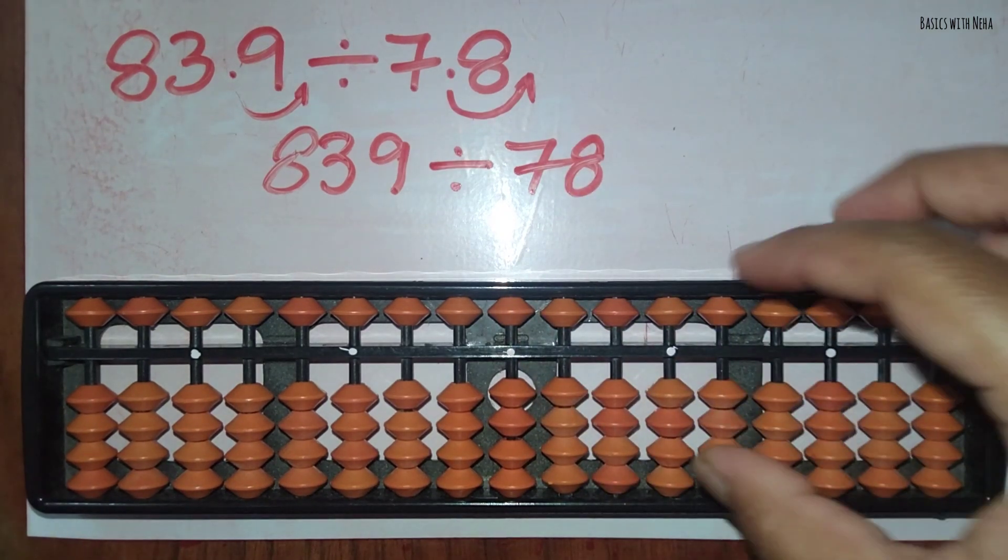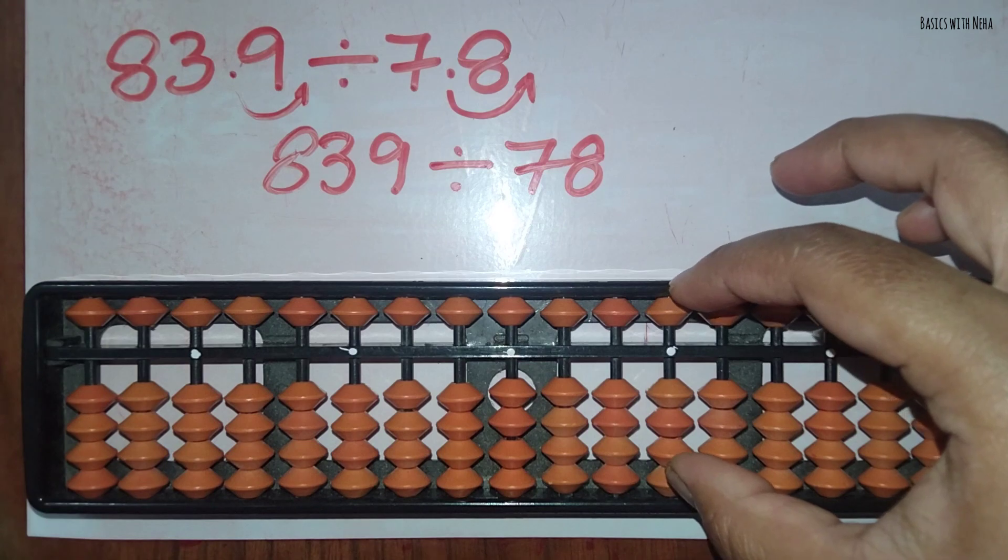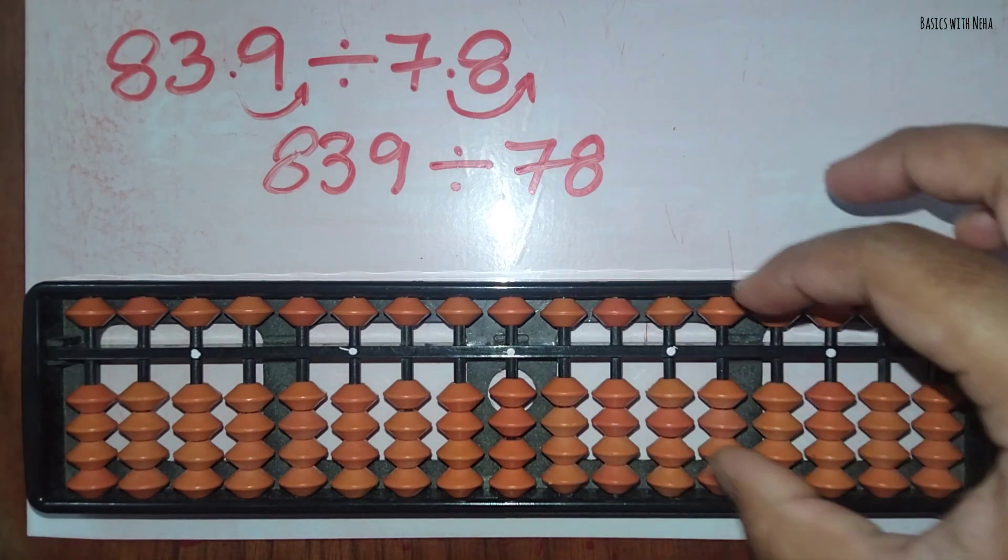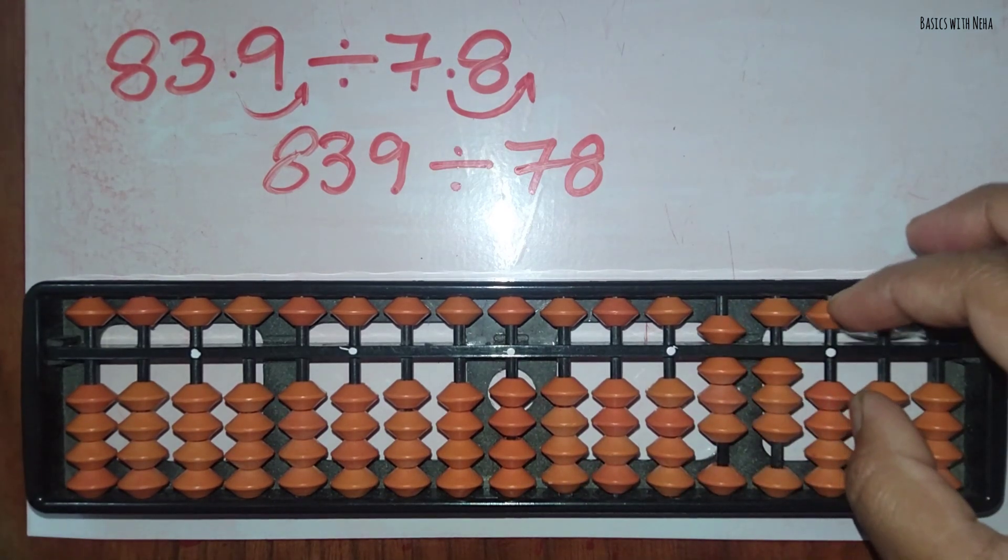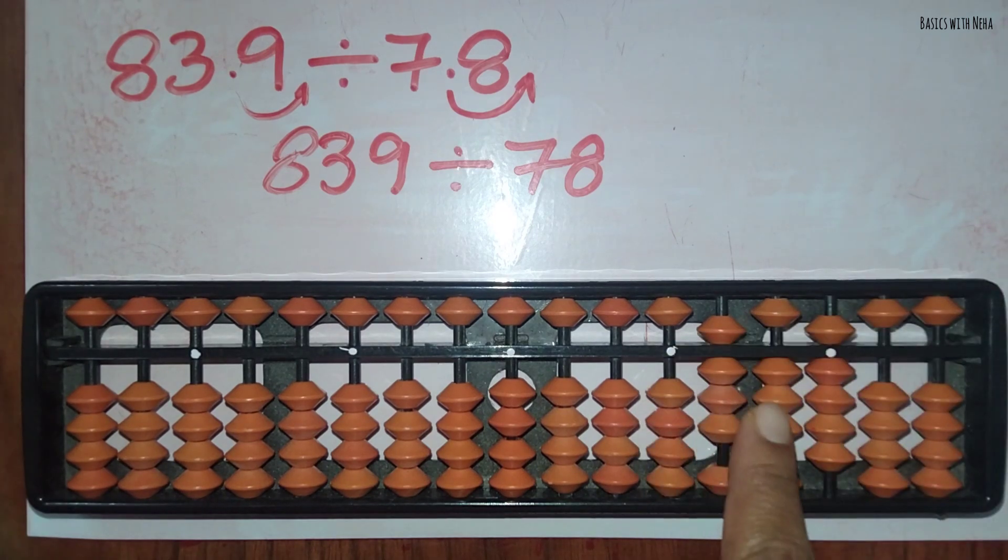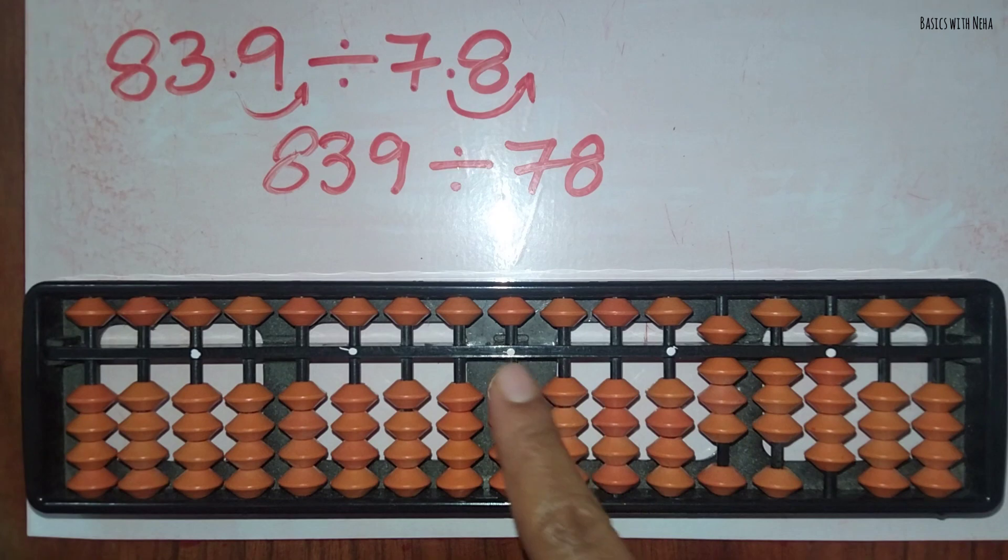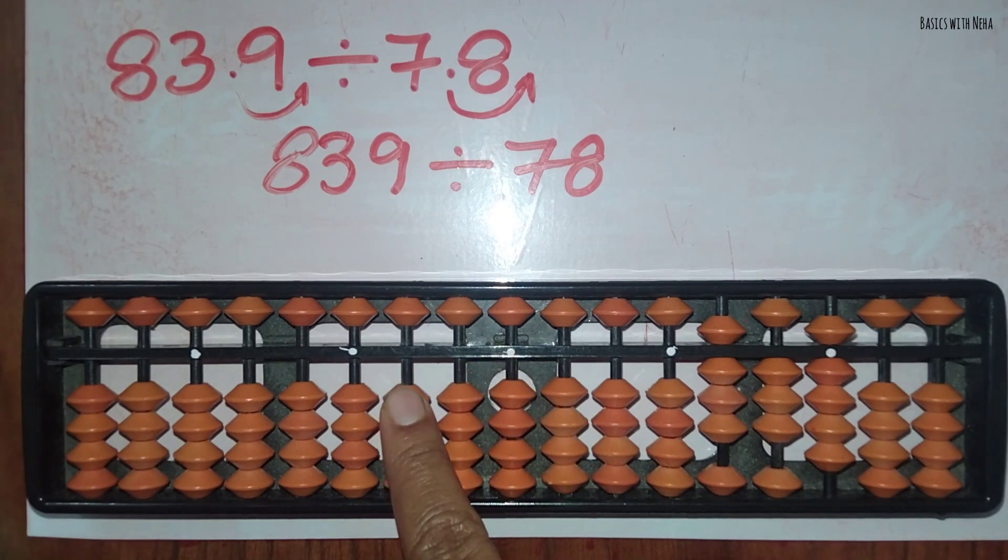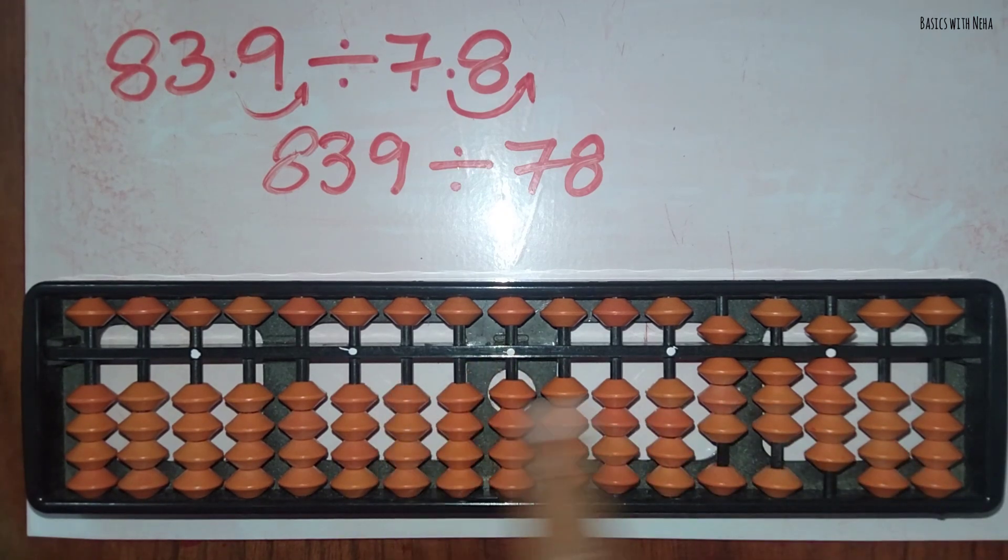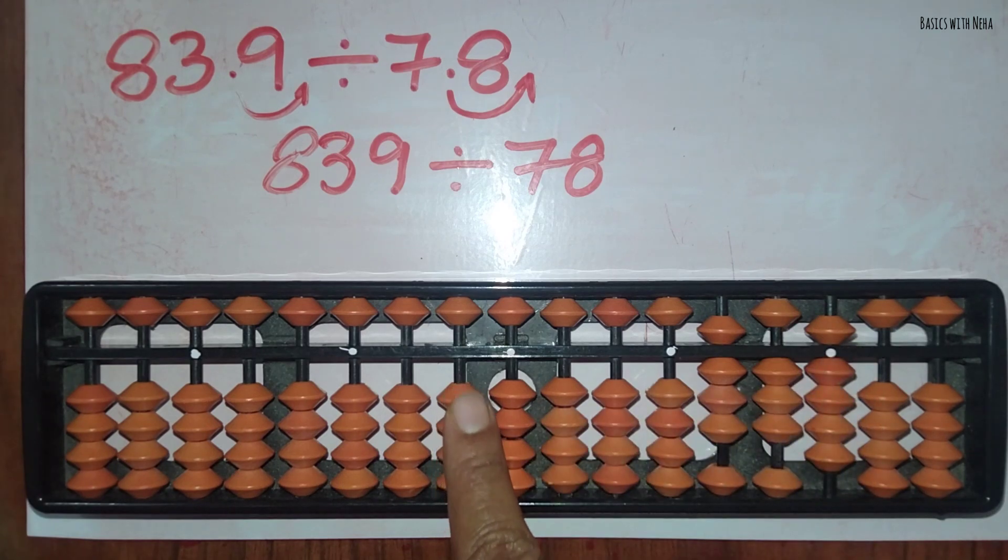Now we can take 839 here and divide this by 78. 78 ones are... Here, one is in the hundreds place. Since I'm taking two numbers, I'm going to start with the tens place here. So 78 ones are 78.